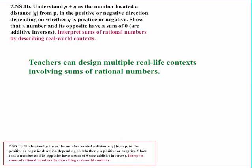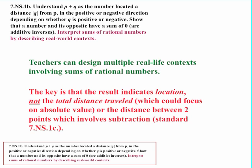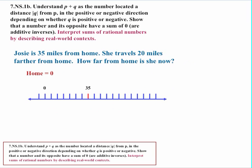Now let's look at the last statement in the standard: interpret sums of rational numbers by describing real-world context. Teachers can design many real-life contexts involving sums of rational numbers. The key is that the result should indicate location, not total distance traveled — which would focus on absolute value — and it should not involve the distance between two points, because that's really subtraction, which is the next standard, 7.NS.1C. With that in mind, let's look at some examples.